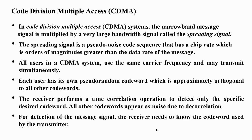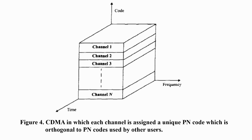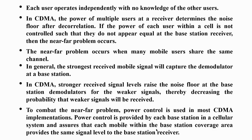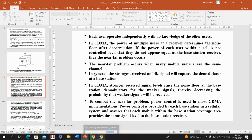In CDMA, a code spreading signal is used to modulate and transmit the signal. At the receiving end, only the user who knows the code can demodulate the signal; all other signals are treated as noise. CDMA uses the same frequency and same time slots. All codes are orthogonal to one another, avoiding interference. CDMA accommodates more users than FDMA or TDMA since there is no restriction on user count. The near-far problem is overcome with power control mechanisms initiated by the base station.